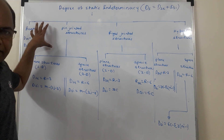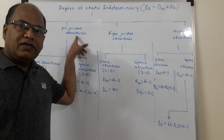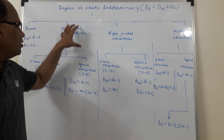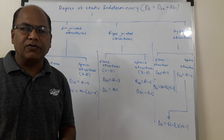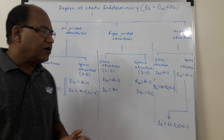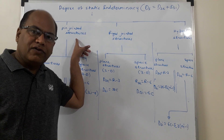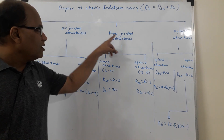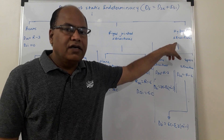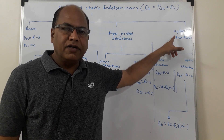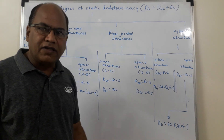A beam is generally a horizontal member which supports vertical loading. In pin-jointed structures, all joints are pin-type joints. Out of the four actions — axial force, shear force, bending moment, and twisting moment — three actions are absent in pin-jointed structures, and they carry only axial forces in their members, provided all members are straight and loads are applied at the joints. In rigid-jointed structures, all actions may be present. Hybrid structures have some pin joints and some rigid joints.